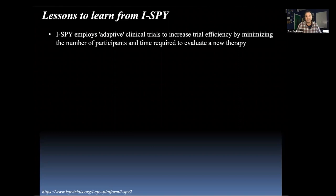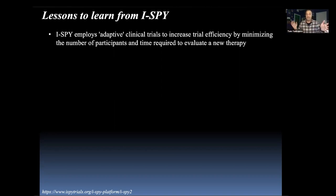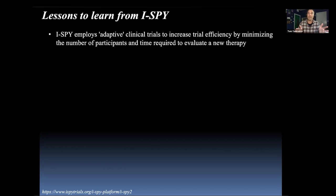I-SPY employs an adaptive clinical trial to increase trial efficiency by minimizing the number of participants and time required to evaluate a new therapy. There might be 10 different experimental regimens and one standard of care regimen running simultaneously. A patient comes in and presents with a series of characteristics, and based on those characteristics they are placed onto one of these trial arms.